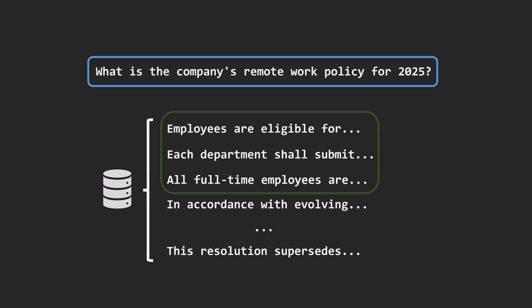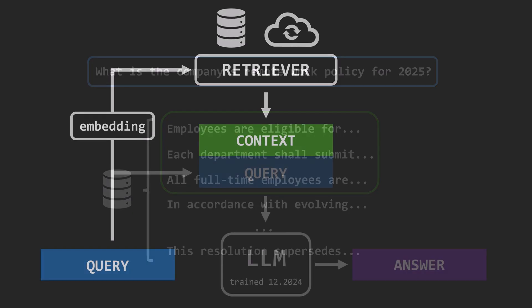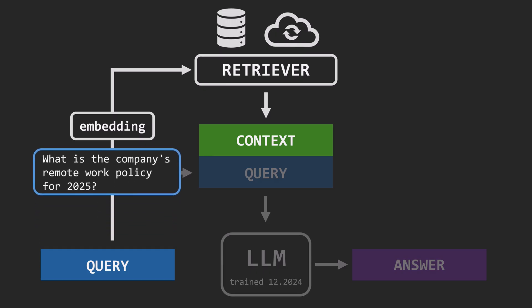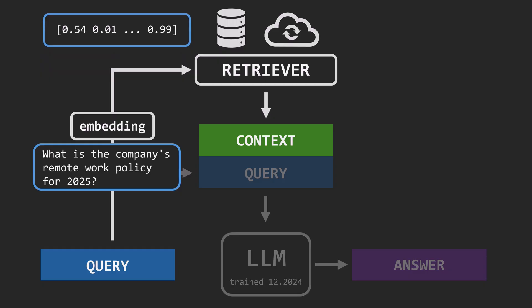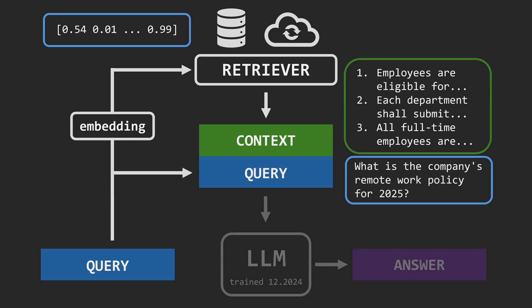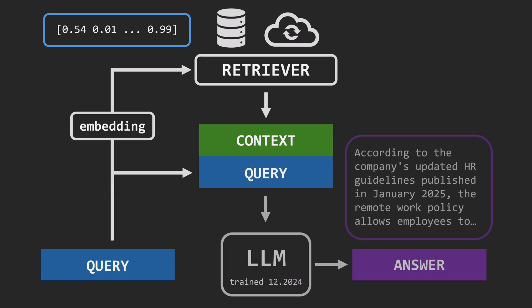Here we selected the top 3 most similar passages. It's worth remembering that vectors are used for very efficient similarity search, but the final context is made of the actual text chunks. In summary, the retriever turns your query into a vector, finds the most relevant text passages via the vector database, and passes these as context to the language model.